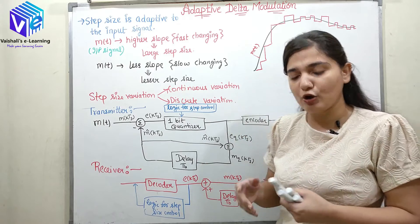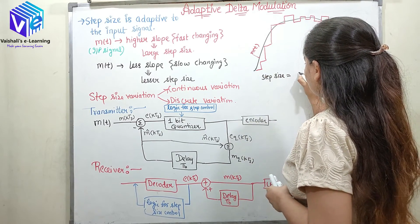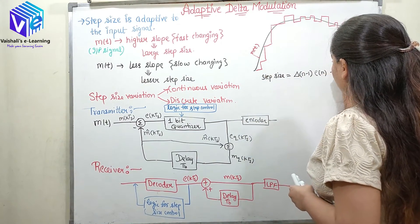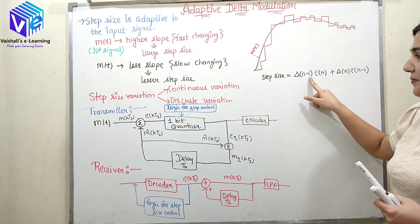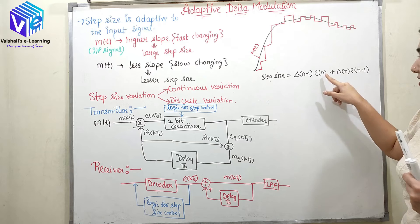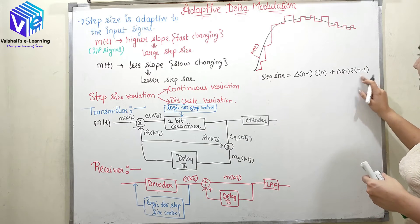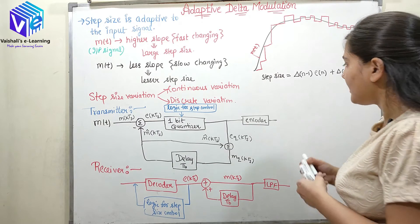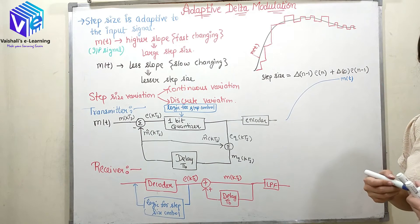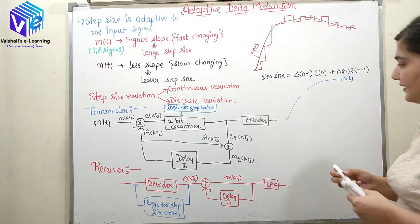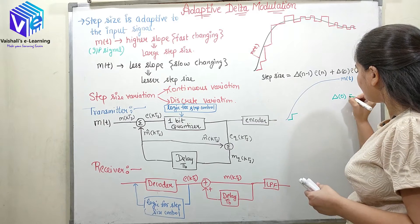Now I will be talking about a discrete logic. According to a discrete logic, the step size is given by δ(n) = δ(n−1) × E(n) + δ₀ × E(n), where δ₀ is the zeroth delta and E is the error function. We will be talking about two cases. The first case is when the message is increasing very fast — we will be seeing how the step size will be increasing here. Now if I take the first step size, I am taking δ₀ to be δ.